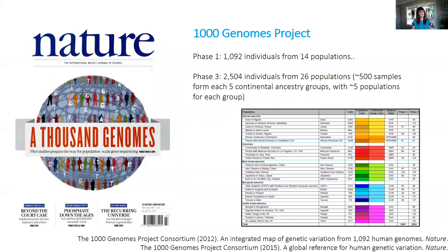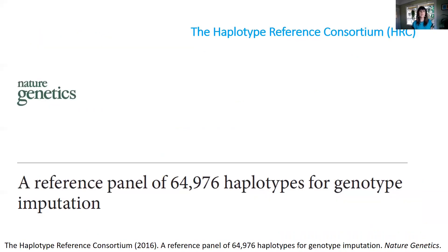HAPMAP was followed by the 1000 Genomes Project. This project had several phases: a pilot, then phase one released in 2012, and phase three released in 2015. It wanted to find 90% of common variants, looking at a broader set of individuals from different continental backgrounds. It included 1,000 to 2,000 individuals and obtained information from 88 million variant sites, with SNP frequencies going down to 1%, and also includes indels.